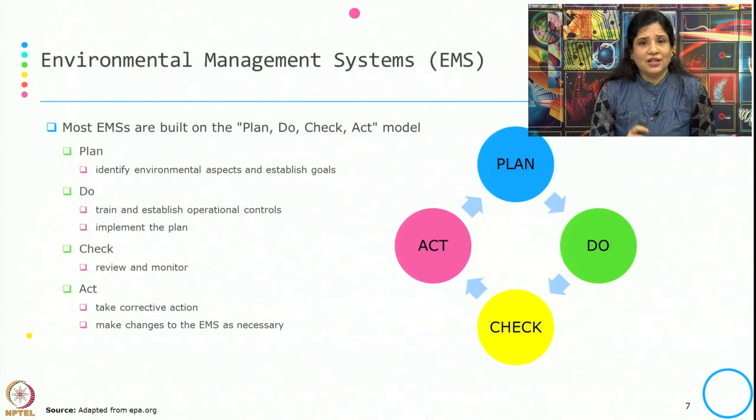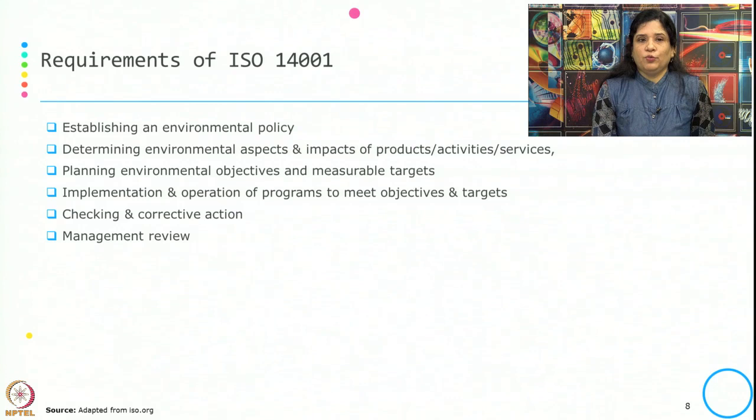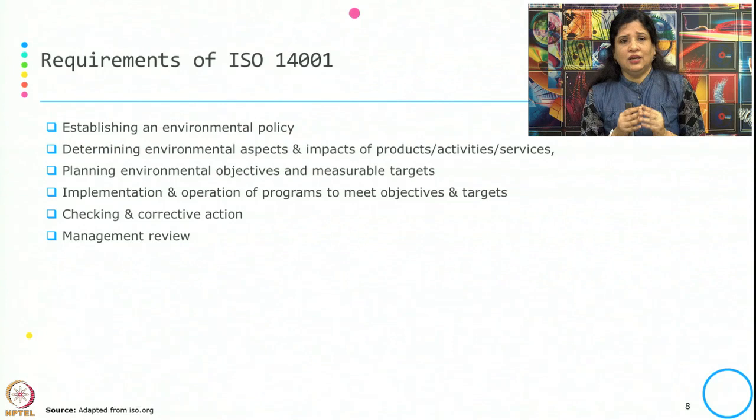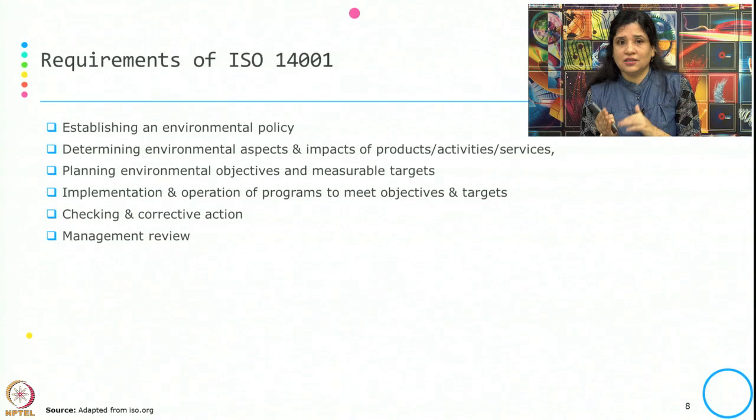Now, what are the requirements for ISO 14001 and why is the standard being accepted? First is to establish an environmental policy, then determining the environmental aspects and their impact on products, activities, and services, planning for environmental objectives and measurable targets, implementation and operation programs to meet those objectives and targets, checking and corrective actions, and management review.